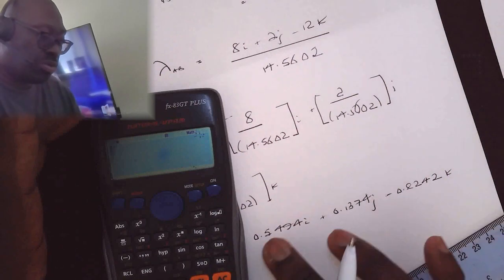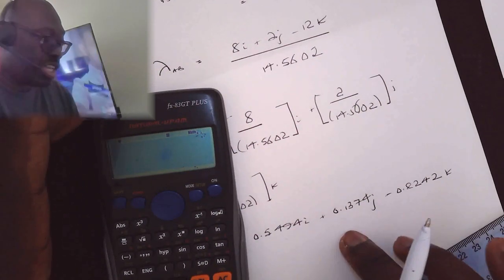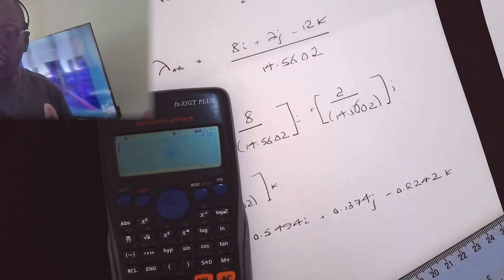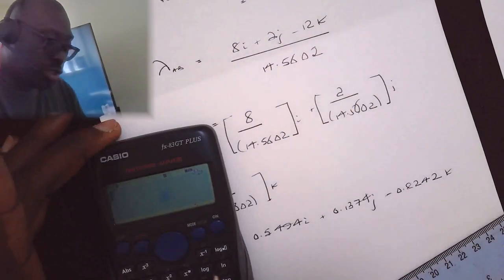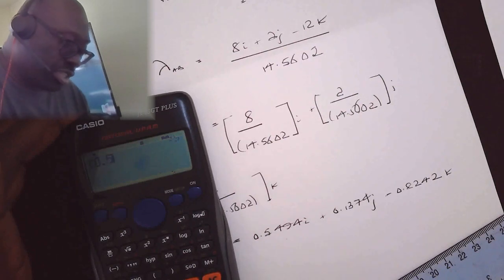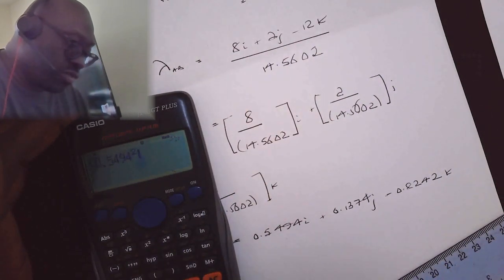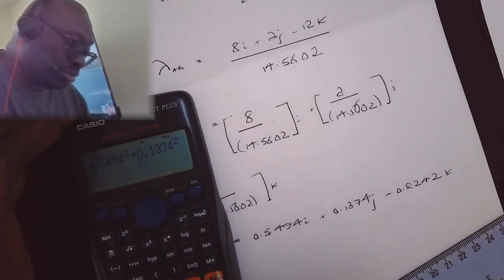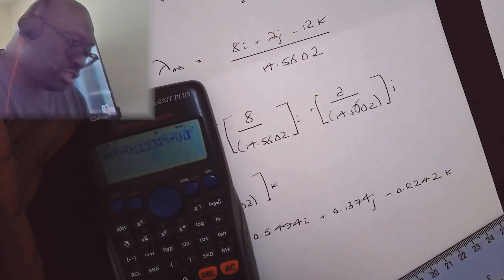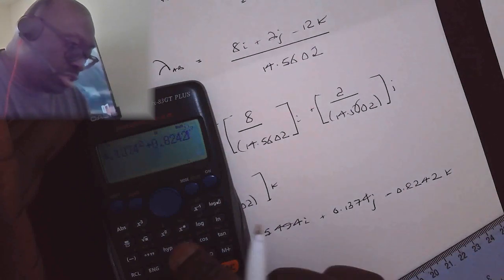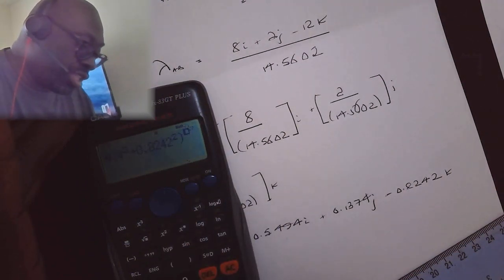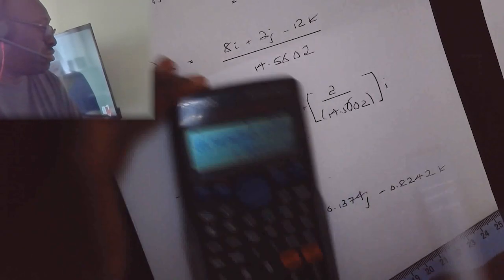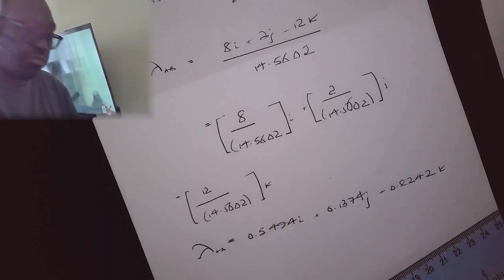As stated, to ensure you're on the right track, double check by working out the magnitude of the unit vector. Computing the square root of 0.5494 squared plus 0.1374 squared plus 0.8242 squared gives approximately 1. So we're good — that confirms the unit vector is correct.